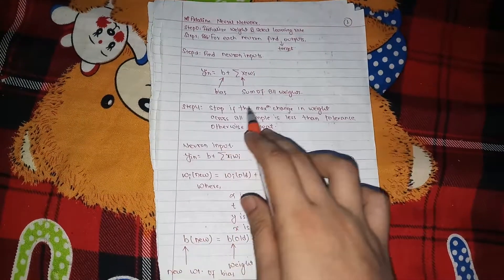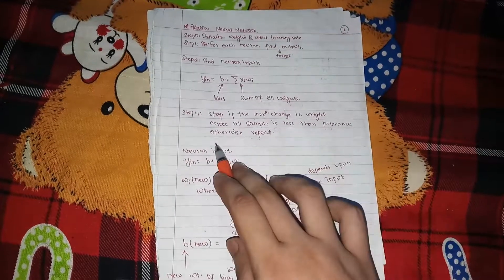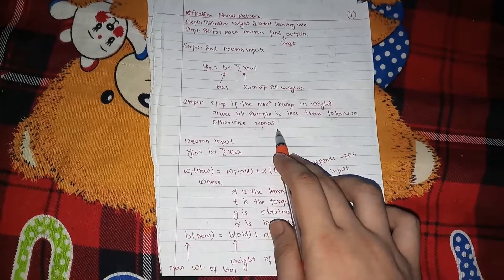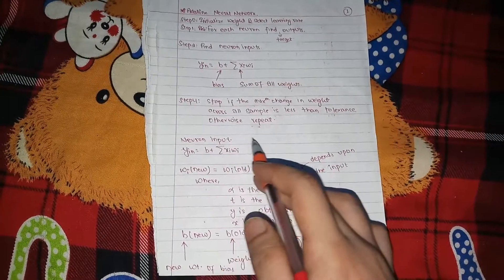Step 4, stop if the maximum changes in the weight across all the samples is less than the tolerance, otherwise repeat. So you need to find out the tolerance, that is the minimum change in the weights.